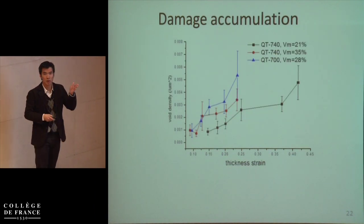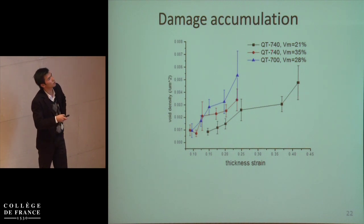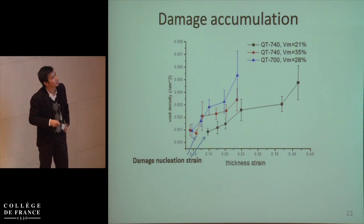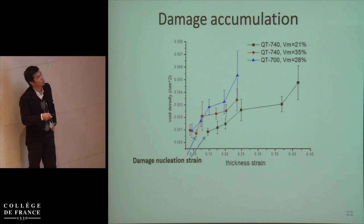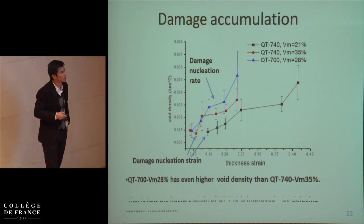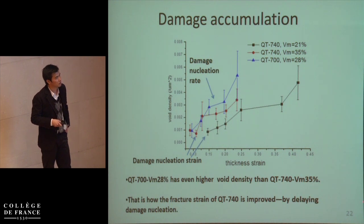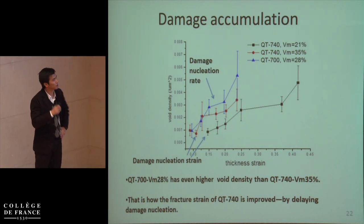Then we compare the difference in damage accumulation. Comparing the black and red lines — both at 740°C but with different martensite contents — increasing martensite fraction decreases damage nucleation strength. Looking at the blue line for QT700 with less martensite, it has as low a damage nucleation strength as QT740 and even a higher damage nucleation rate. This result tells us that the fracture strength of QT740 is improved by delaying damage nucleation.